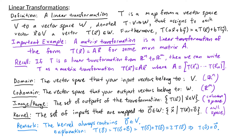Now let's try to understand why the zero vector is always in the kernel. Let's first consider T of zero. This input zero can be rewritten as zero plus zero. Using the property of a linear transformation, we can break this apart into T of zero plus T of zero, which combines to give me two T of zero. So if one copy of T of zero equals two copies of T of zero, the only vector that's equal to twice itself is the zero vector. That's why T of the zero vector gives the zero vector, and since the zero vector in V is mapped to the zero vector in W, the zero vector in V is in the kernel.